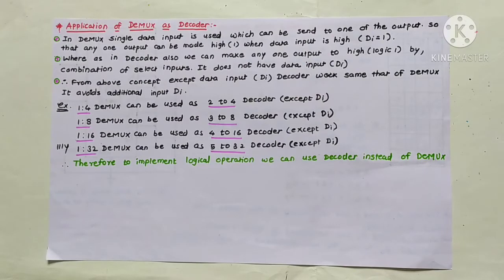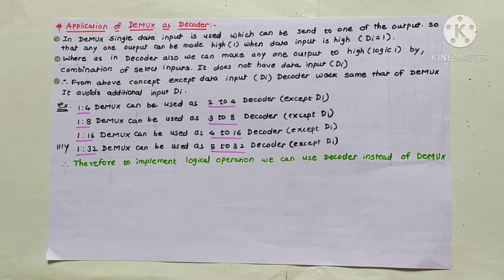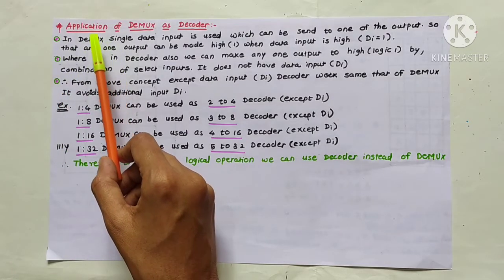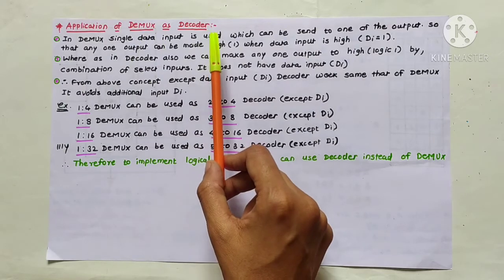Hi students. I hope you are enjoying the electronics video lectures. In the last lecture we studied the need of multiplexing and demultiplexing, and some examples on multiplexer. As we know, a multiplexer has many inputs and only one output, but a demultiplexer has only one input and many outputs. Now let us see some applications of demultiplexer as a decoder.